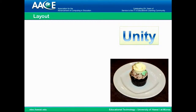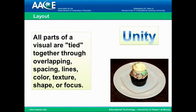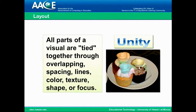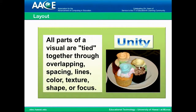Unity is a concept most people haven't heard of. It means all the parts of a visual are tied together through overlapping, spacing, lines, color, texture, shape, or focus. In this slide, you see we have three objects: the word box on the left, the cupcake, and the title on the right. Right now, it's like you have three pictures. So if we squeeze those together, we have more unity. But even more, if we add a green background, we tie them together in a way that makes them into a single picture.